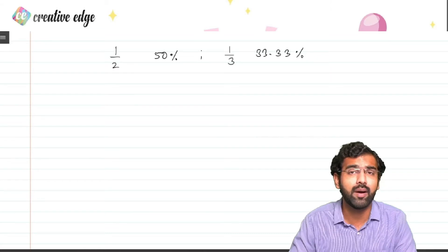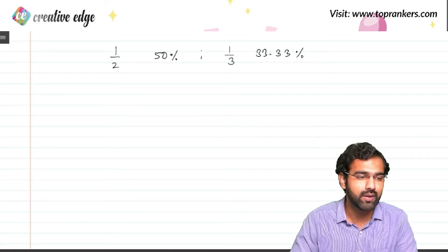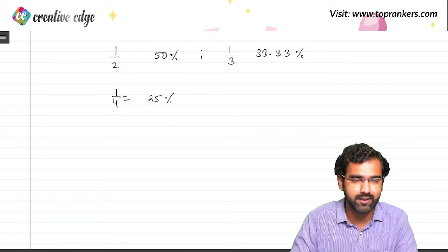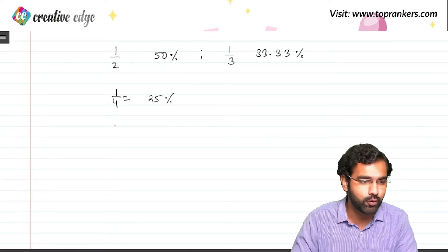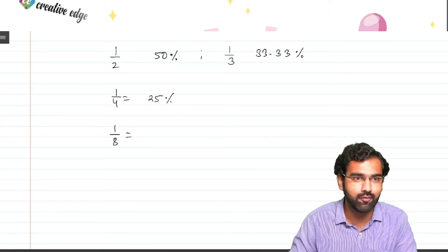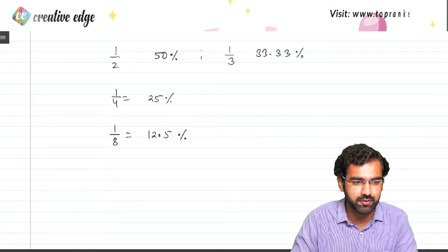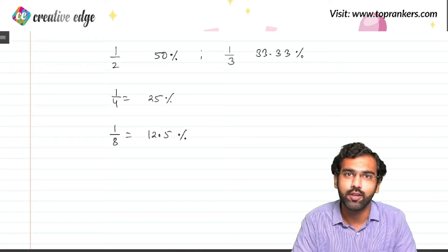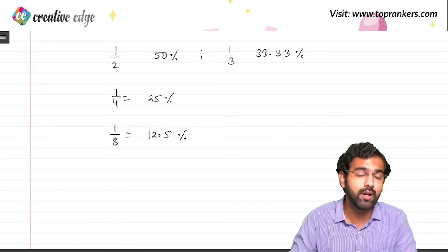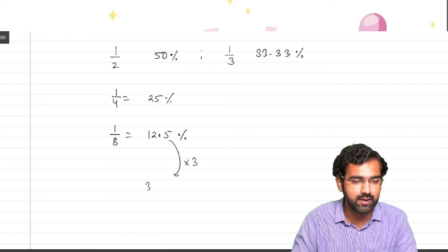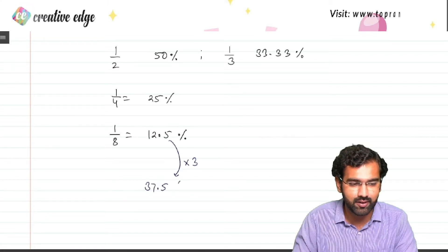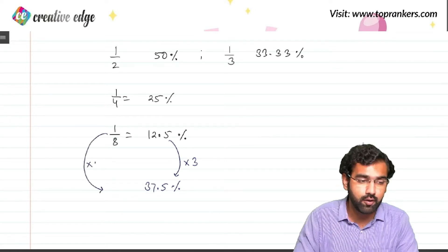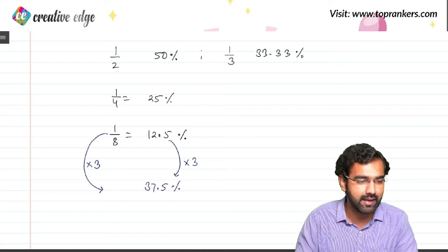These are quite simple. If 1/2 is 50%, you can easily crack that 1/4 is nothing but half of 1/2, which should be 25%. Similarly, half of 1/4 is 1/8, and that should be half of 25, which is clearly 12.5%. With the help of these fractions, some new percentages are also created. For example, if I triple 12.5, the triple of 12.5 is 37.5, so 37.5% in terms of fractions is triple of 1/8, which is 3/8.